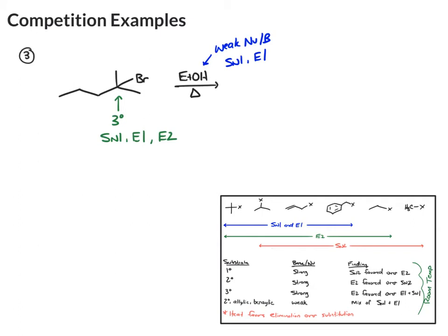And then thirdly, we have heat, and heat favors elimination. So now if you look at all of the factors and figure out what matches, we have in every category E1. So that means this will form a product through the E1 mechanism.